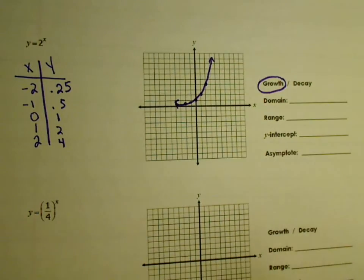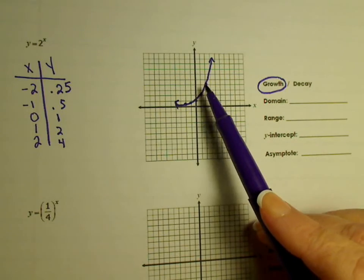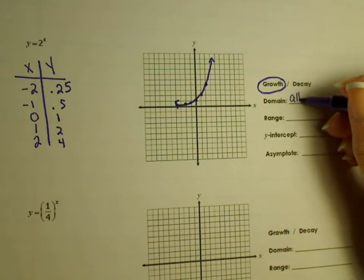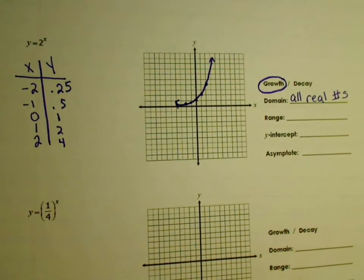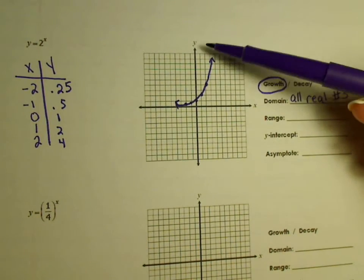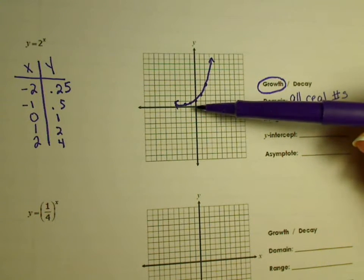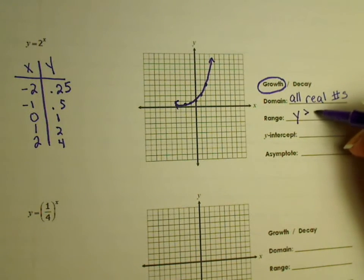The domain — remember, domain is your x values. For the domain, this keeps going that way and it keeps going up and out, so your domain would be all real numbers because it does keep going. For the range, it starts anywhere above 0. It does not include the 0, so your y is going to be greater than 0.